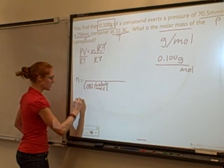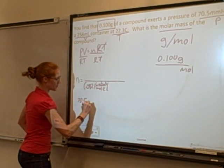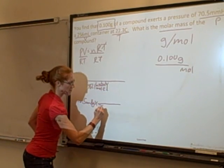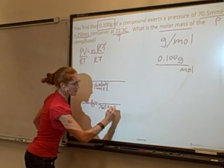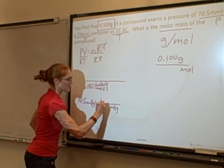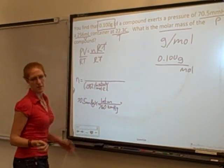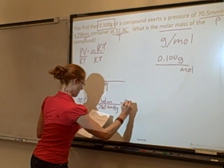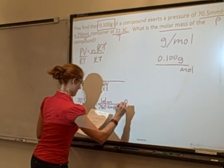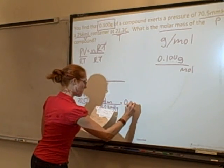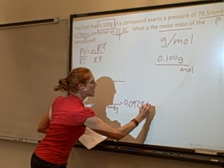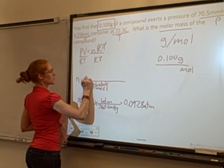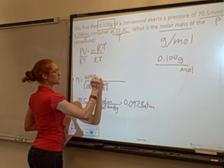So we have for pressure, 70.5 millimeters mercury, and you can look in your handy sheet you get for every test. There are 760 millimeters mercury for every one atmosphere. You plug that in, and you end up getting 0.0928 ATMs. That's how many atmospheres. So I can plug that in for my pressure. 0.0928 atmospheres.